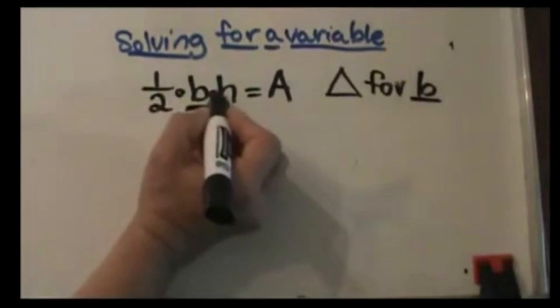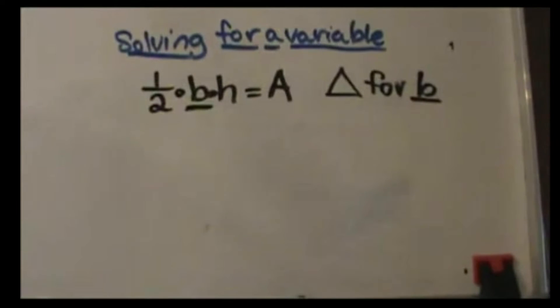Now notice we have multiplication and multiplication. We have to undo two multiplications, so that means we're going to have to divide.